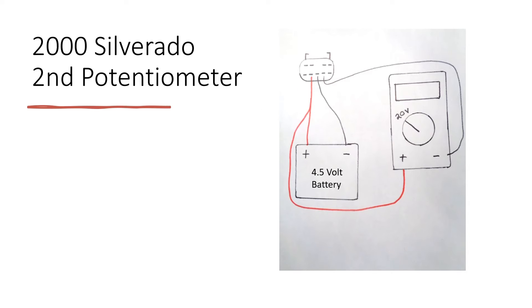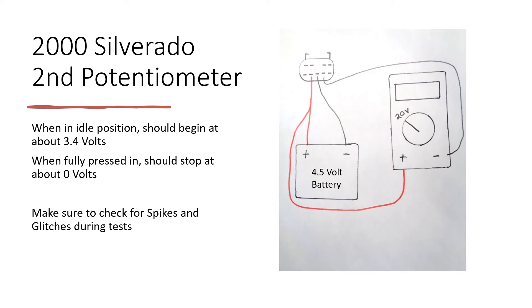After doing this, it should be reading again at about 3.4 volts. After you twist it in, it should read about zero volts. Remember to check for spikes and glitches during the test.